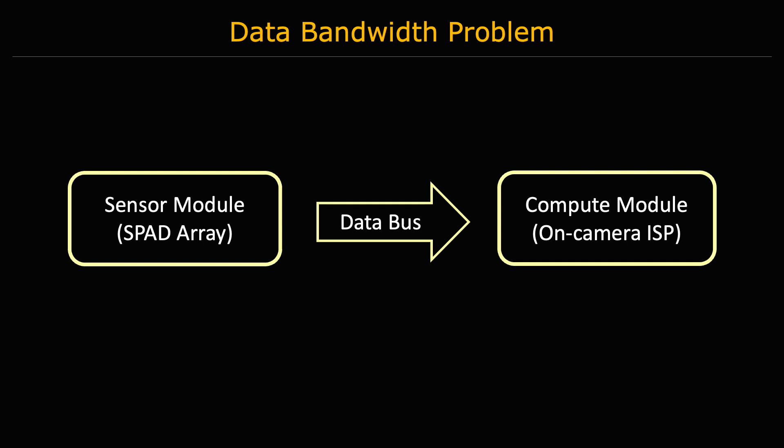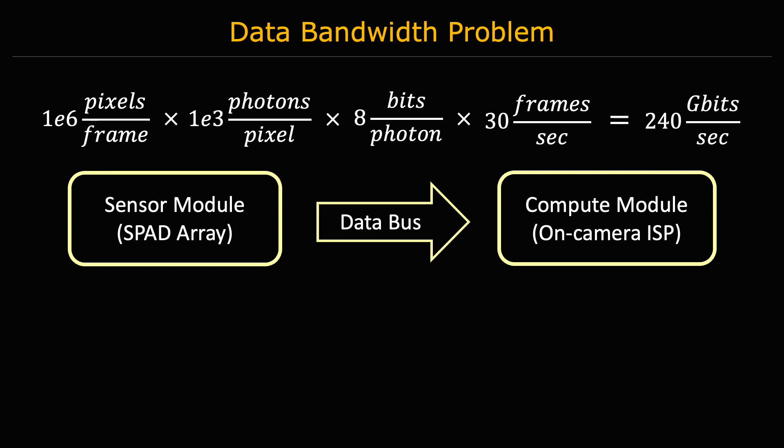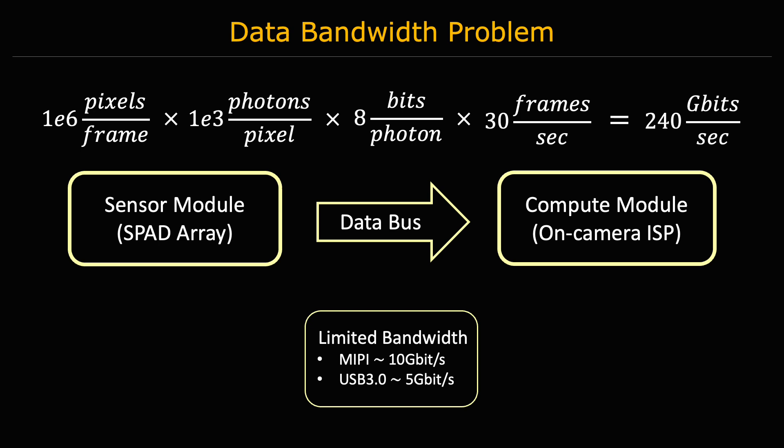Unfortunately, as the resolution increases, the large volume of photon data output by the SPAD causes a severe bottleneck between the sensor and the image signal processor. A 1 megapixel SPAD array that captures 1,000 photon timestamps per pixel per depth image and operates at 30 frames per second will output 240 gigabits per second. This is not only challenging from a data transmission perspective, but also leads to high power consumption.